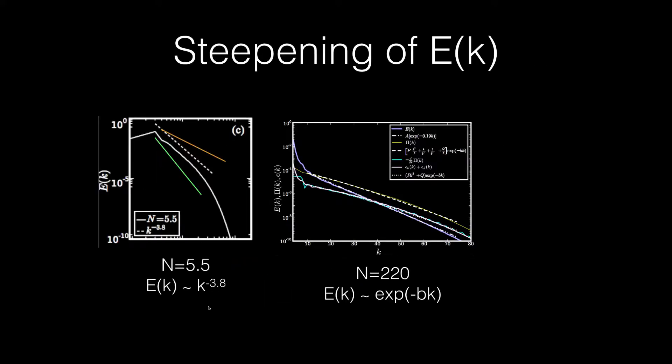For moderate N, like 5.5, the steepness of energy spectrum increases with N. So, -5/3, this is for fluid; -5.5 for N equal to 5.5, and it will be even steeper for larger N.